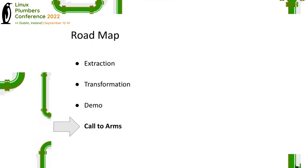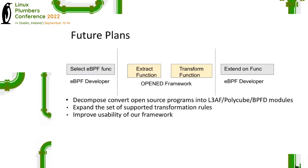In terms of future work, we want to expand the set of transformation rules and take community input on which transformations make sense and whether some transformations are not even possible. This is where we are really looking forward to community input and building a larger community around creating modular BPF programs. Eventually, our goal is to be able to convert open source programs into loadable modules that integrate with existing eBPF orchestration frameworks such as LEAF, FolliQ, and BPFD, and along the way we also want to improve the usability of our framework.